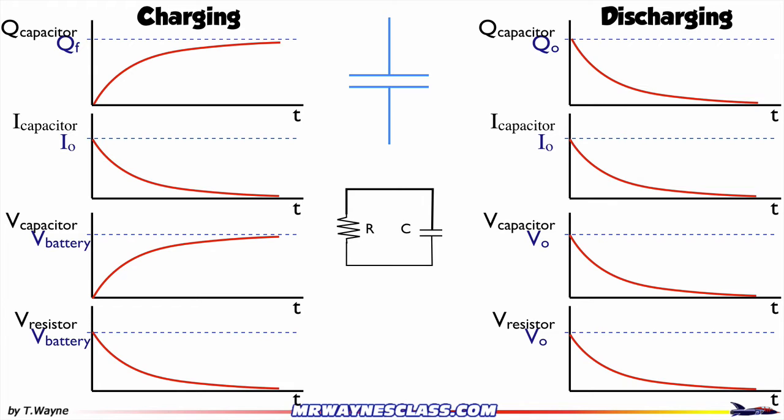Now let's look at the equation we have to describe this model. From looking at the charge when it's charging, the charge as a function of time Q(t) is equal to the final amount of charge on the capacitor times (1 minus e to the negative t over RC). The e is Euler's number, approximately 2.718281828459045, and that's the value E on the calculator that you can use.